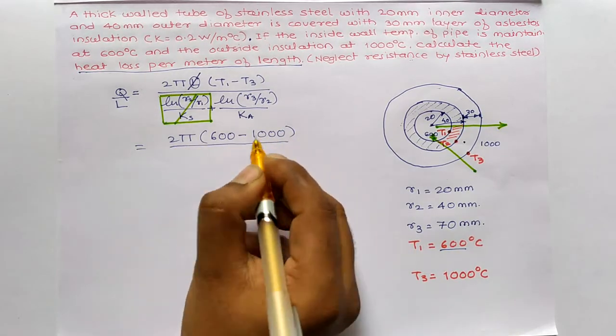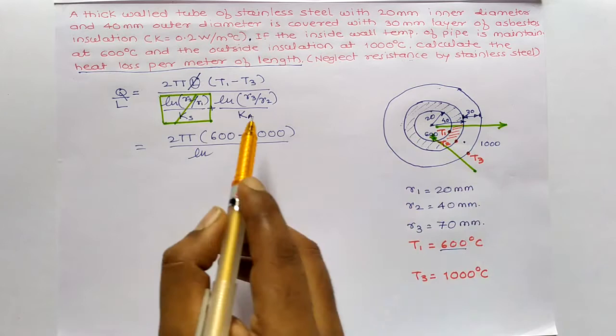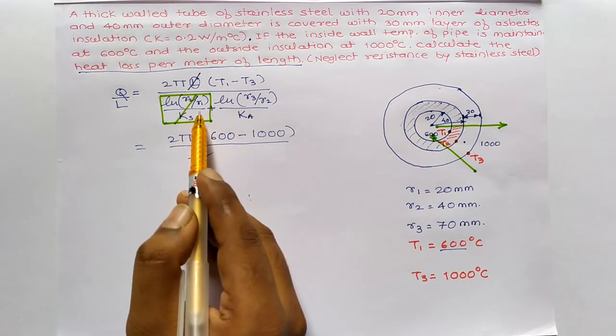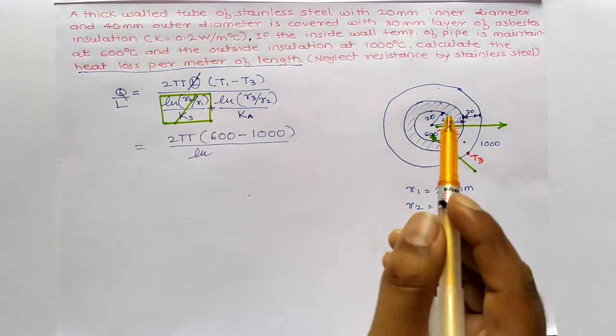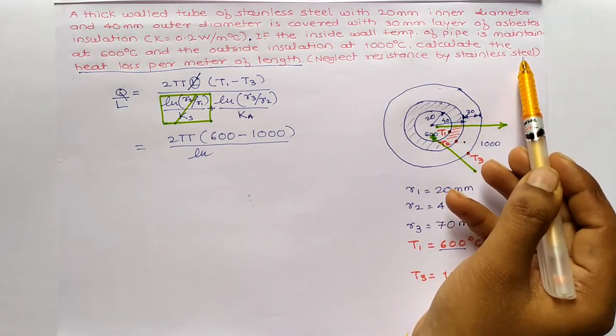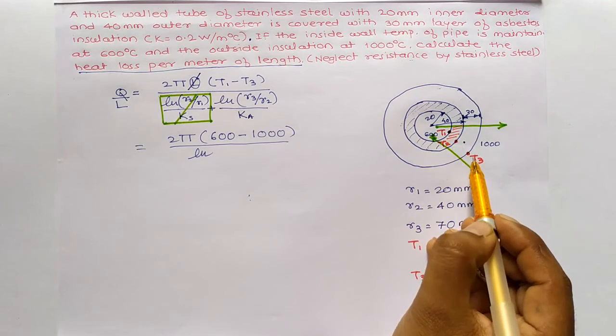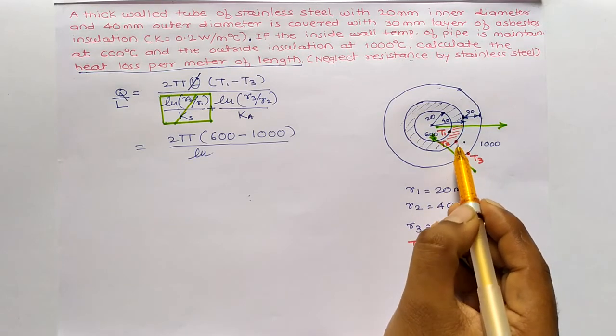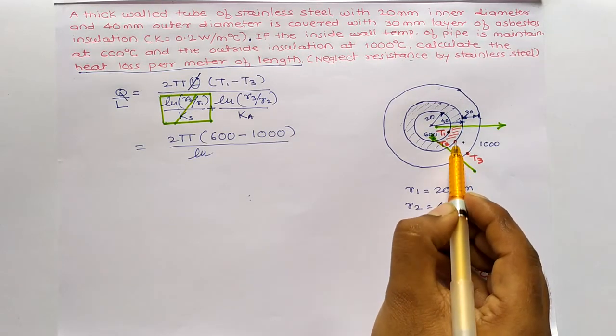divided by, since, why I have given this example? Because, even if they said that, neglect resistance offered by stainless steel, even if we need to take T1 and T2. Don't try to find out T2.